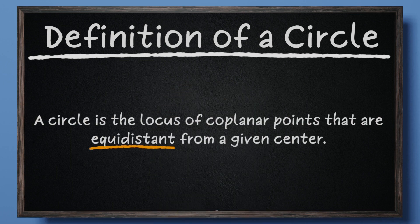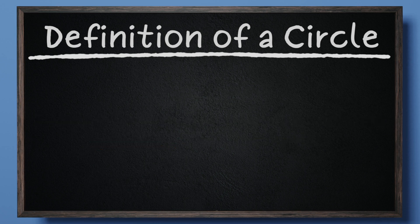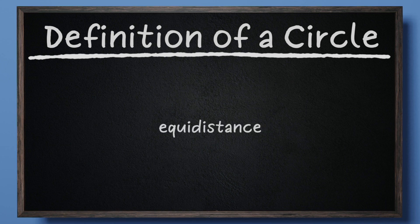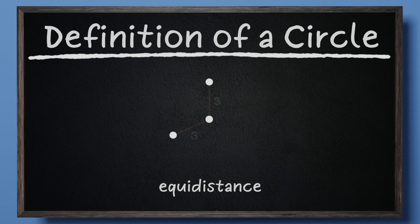Let's examine the word equidistant next. You might be able to hear the words equal and distance embedded in the word equidistant. This is exactly what equidistance means. For objects to be equidistant from each other, they must be the same distance apart from a given location.